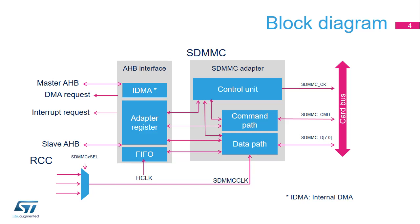It consists of an SDMMC adapter and an APB interface. The SDMMC adapter provides functions such as clock generation, command, and data transfer, while the APB interface manages the control and status registers, FIFO buffers, as well as DMA and interrupt requests.